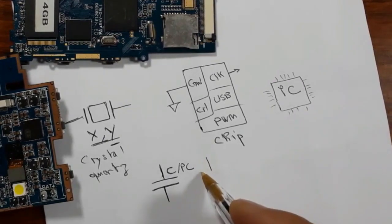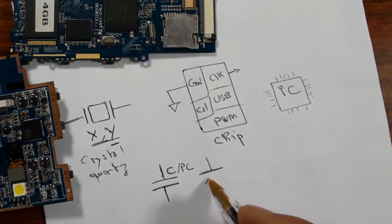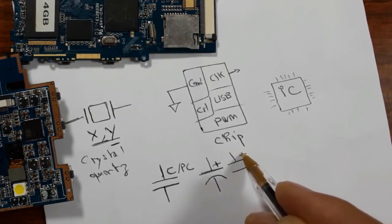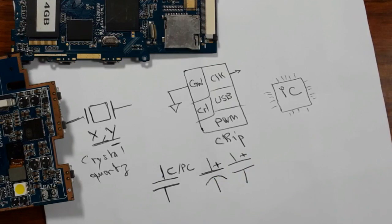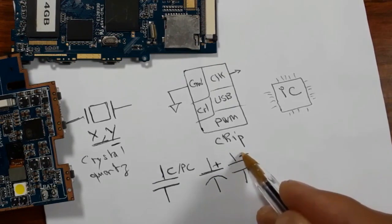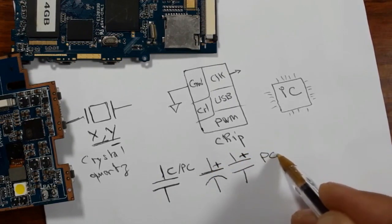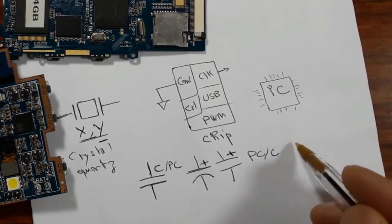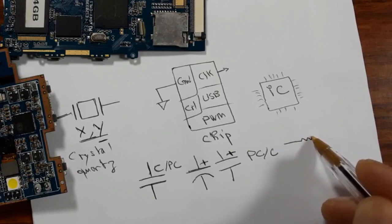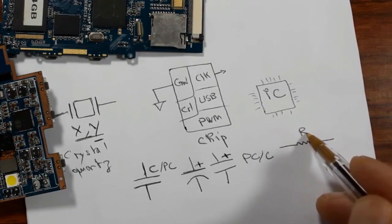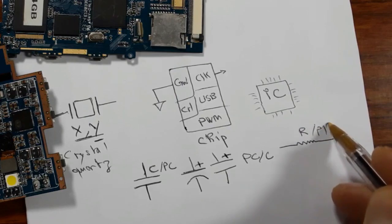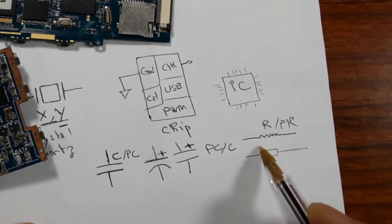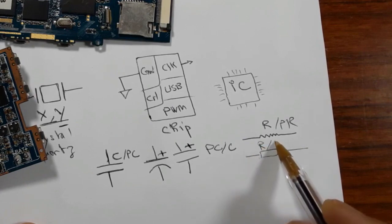For chemical capacitors — also called polarized capacitors — this is the symbol, with a plus sign here. The reference is PC or C. For resistors, you can find the symbol like this, with reference R or PR. There is also an alternative symbol for resistors, also using R or PR.